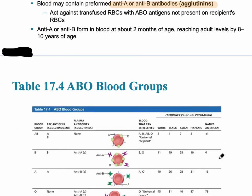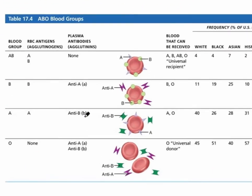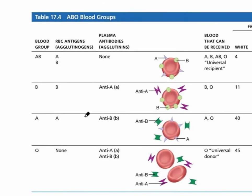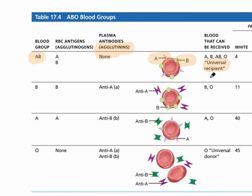A person with blood group AB has both the A marker and the B marker. In their plasma, they're not going to have any agglutinins or antibodies, because they already have both the A and B antigens — the antibodies in plasma are against all foreign invaders, and if A and B are already on the red blood cell membrane, there are no foreign invaders. AB is the universal recipient, specifically AB positive being the best universal recipient.